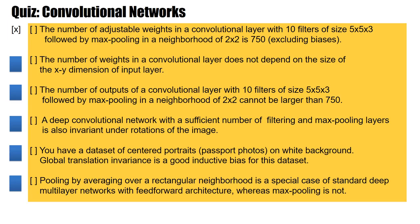Yes, this is correct. The number of weights is 10 times 25 times 3, which makes 750. The max pooling stage afterwards has a fixed neighborhood, so there are no free parameters. The answer 750 is correct.